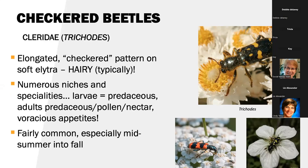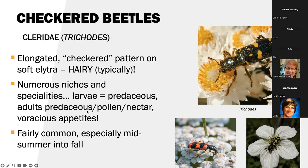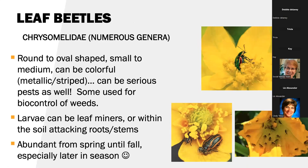The next group is one of my favorites: these are the checkered beetles, the clerid beetles. The genus I put here is Trichodes. They're elongated, checkered, with soft elytra, smaller than the cantharids and meloidae, but they're hairy — note all the hairs on these pictures. This group is large and occupies numerous niches and specialties. The larvae can be predaceous; adults are also predaceous. They feed on pollen and nectar if they can't find another insect to feed on, and they have voracious appetites. These are fairly common, especially in midsummer into fall.